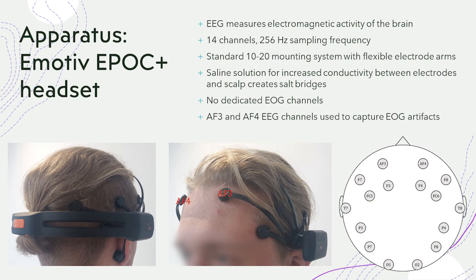EEG is the process of measuring electromagnetic activity of the brain. The apparatus used to collect neural data is the Emotiv Epoch Plus headset, with 14 active channels operating at 256 Hz. The positioning of the electrodes follows the international 10-20 system depicted on the right. With flexible electrode arms easily fitting different people, the headset is simple to set up. However, it utilizes saline solution to increase the conductivity of the scalp. When electrodes are placed on long hair, leaking saline can run via the hair strands and create short circuits, also known as salt bridges, thus compromising the efficiency of the device.